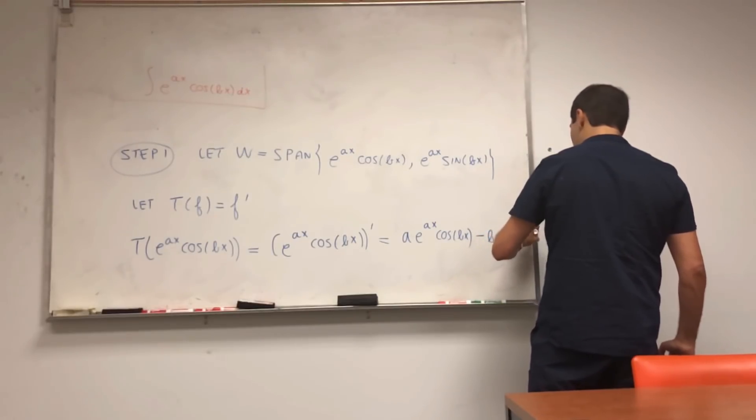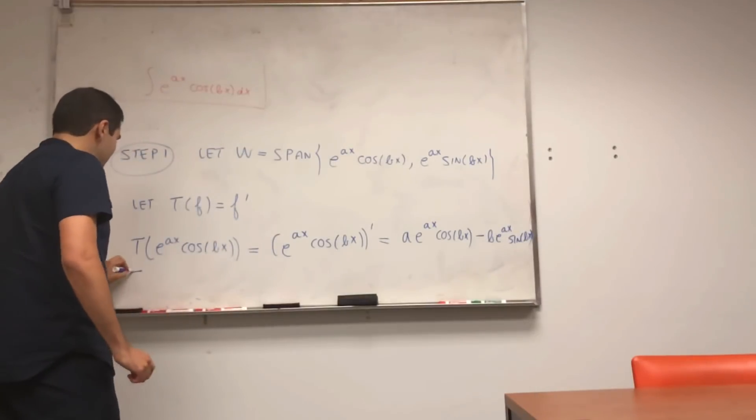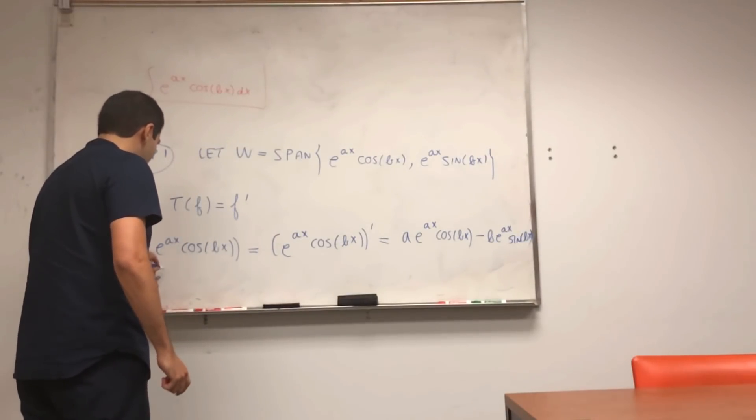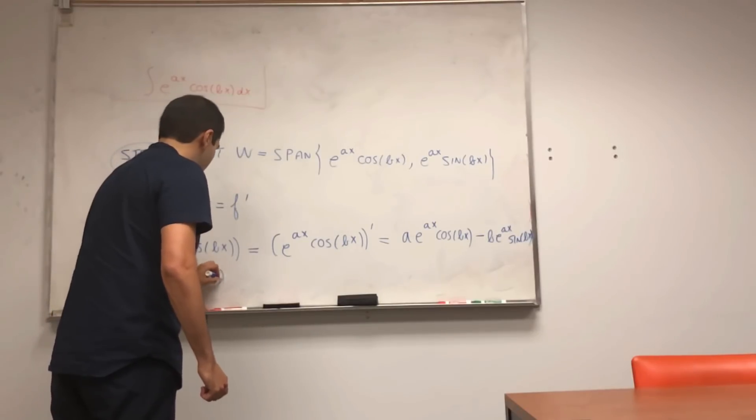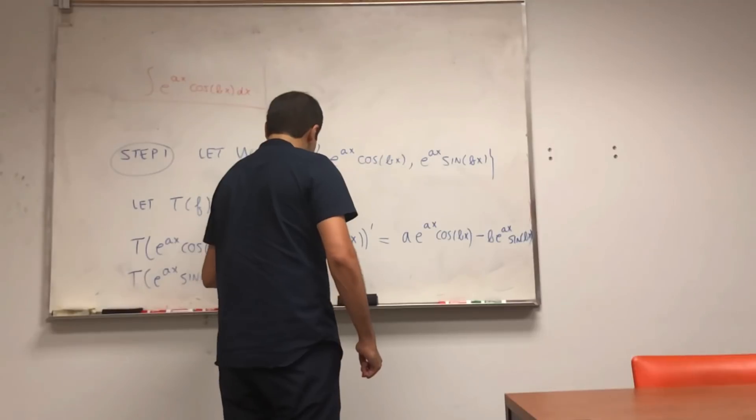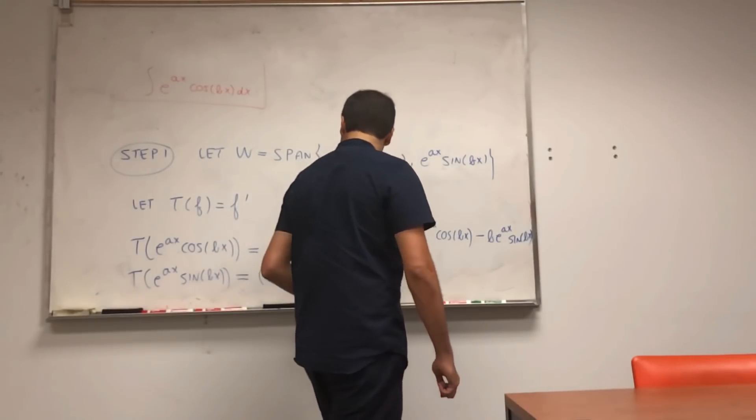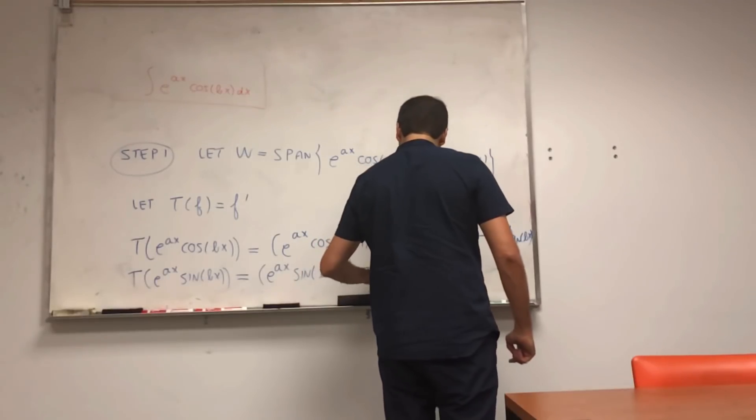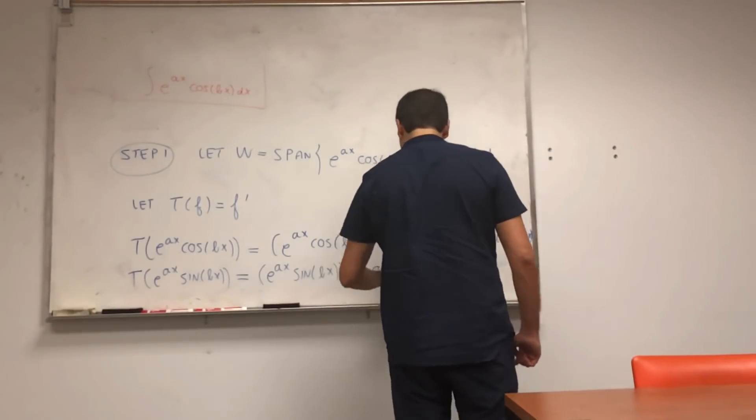Let's do the same with e to the ax sine of bx. Well, that's just the derivative of e to the ax sine of bx prime, and that becomes again a e to the ax cosine of bx.